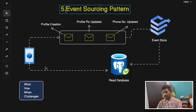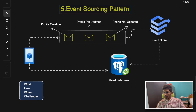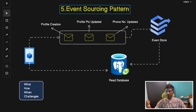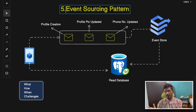Use event sourcing when a system needs an immutable audit log of all changes, and for systems requiring eventual consistency. Challenges include eventual consistency making debugging difficult and the need for additional infrastructure for event storage and processing. A real-life example: when you update your profile picture on Instagram, it may not be immediately visible on the web version — it takes some time to propagate, which is event sourcing in action.